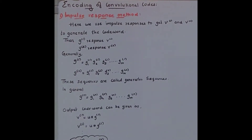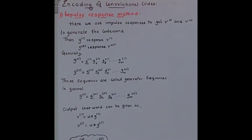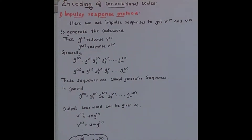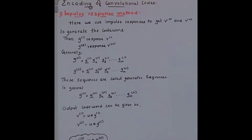Hi friends, welcome to today's class. Today we are discussing about encoding of convolutional code. There are two types of encoding: the first one is impulse response method or time domain representation, and the second one is transform domain representation. In this class we are discussing about time domain representation or impulse response method.